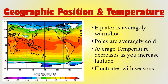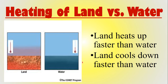The average temperature decreases as you increase in latitude — as you go from the equator toward the poles, average temperature goes down. But there is fluctuation with seasons because of Earth's axis, which is why summer months have warmer averages than winter months. Land heats up faster than water — that's why at the beach the sand can be burning your feet while the water stays cool. Land also cools down faster than water, so at night the water feels warmer than the sand.